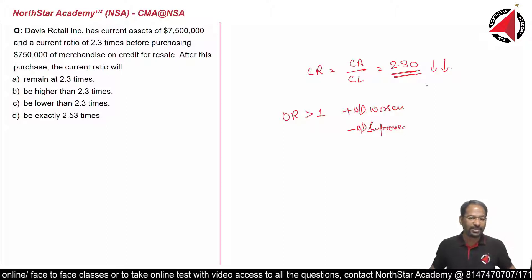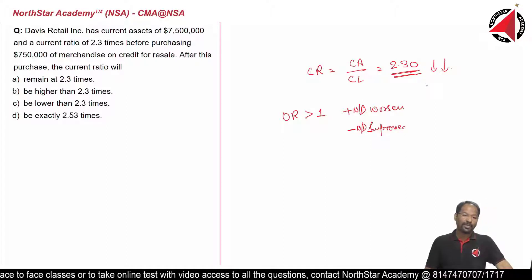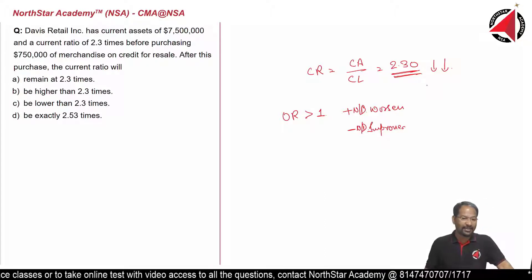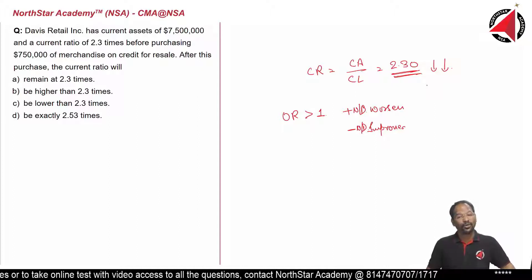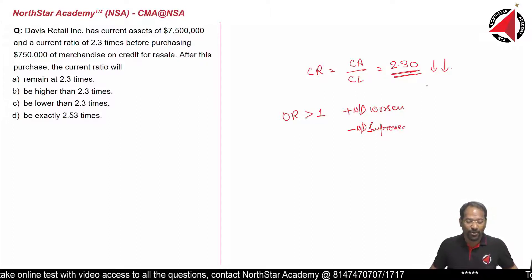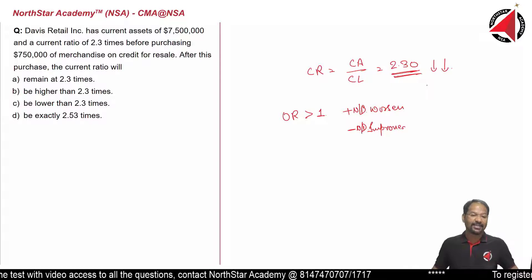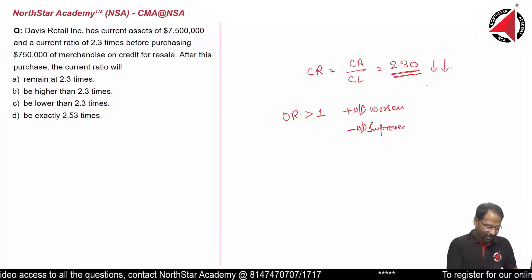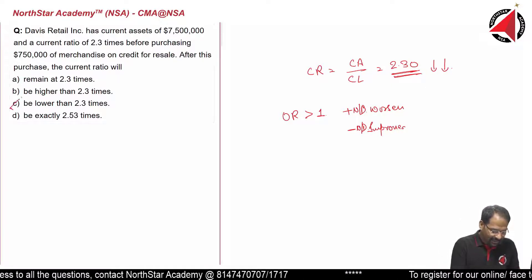Let's look at options. Remain at 2.3 times, which is not correct. Be higher? No, it will not be higher, it will rather be lower. Let's look at option C. It says lower than 2.3 times. Option C is the correct answer.